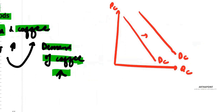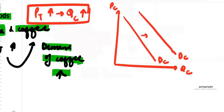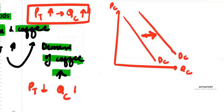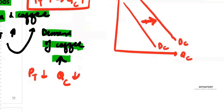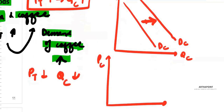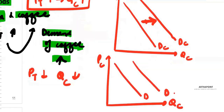When the price of tea increases, the quantity of coffee will increase and the demand of coffee will increase — it will shift to the right. Similarly, when the price of tea decreases, people will shift towards tea; even coffee drinkers will shift towards tea. So the demand of coffee will decrease and the coffee demand curve will shift backward.